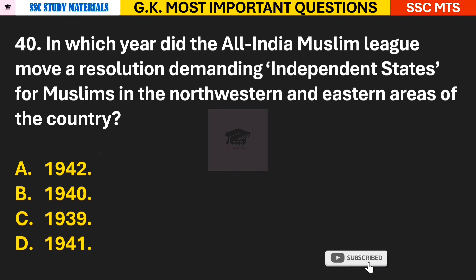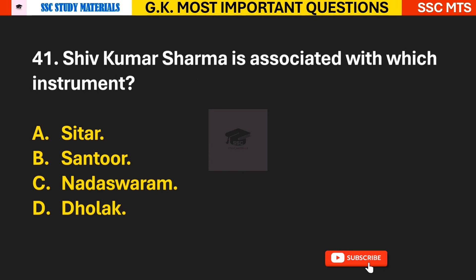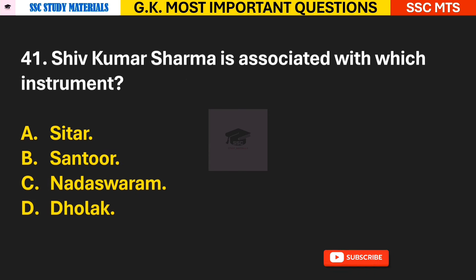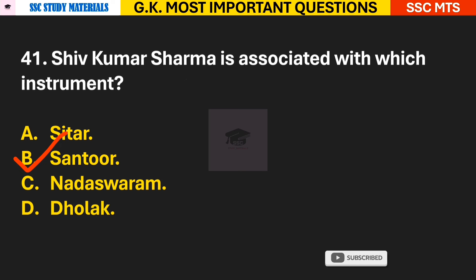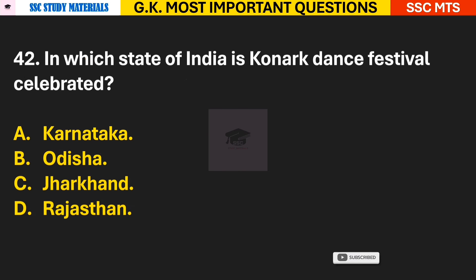Question 40: In which year did the All India Muslim League pass a resolution demanding independent states for Muslims in the north-western and eastern areas of the country? Answer B — 1940. Question 41: Shiv Kumar Sharma is associated with which instrument? Answer B — the Santoor.